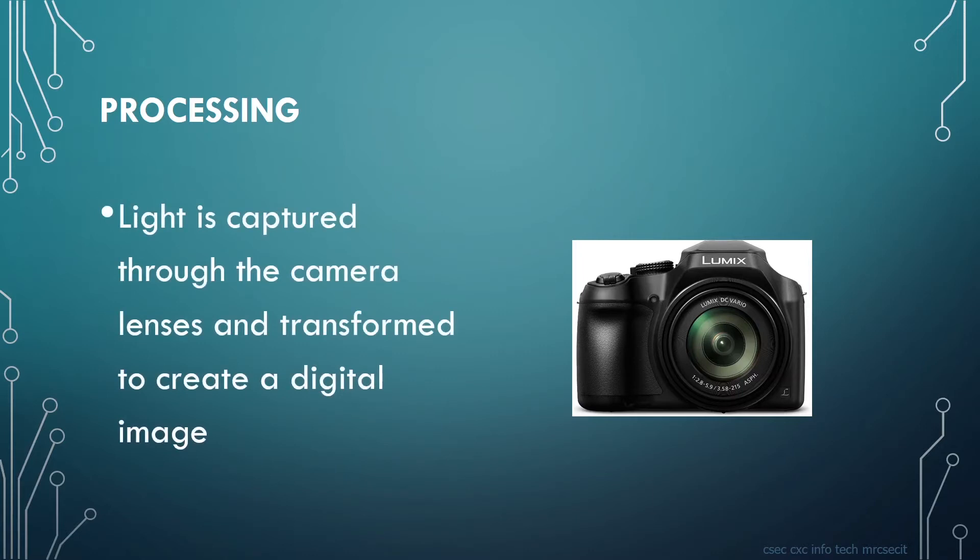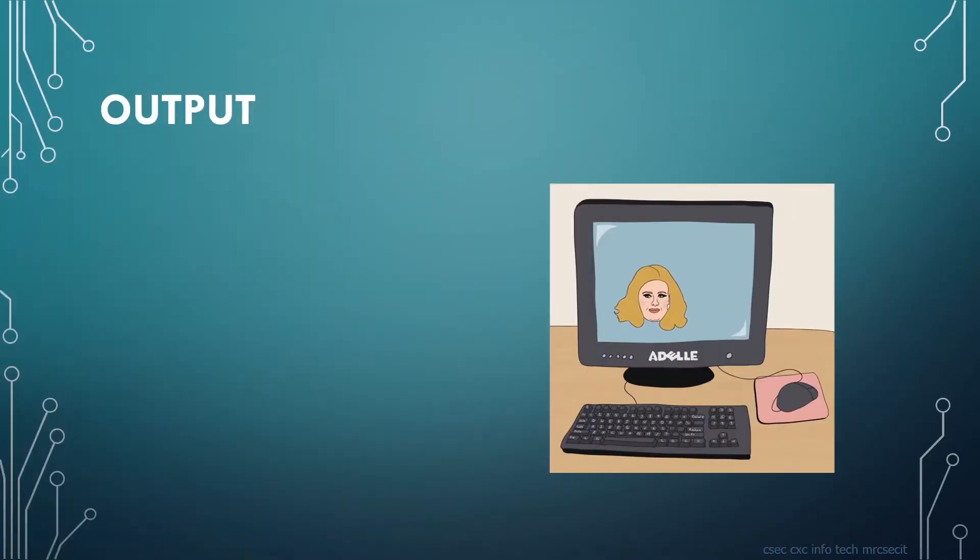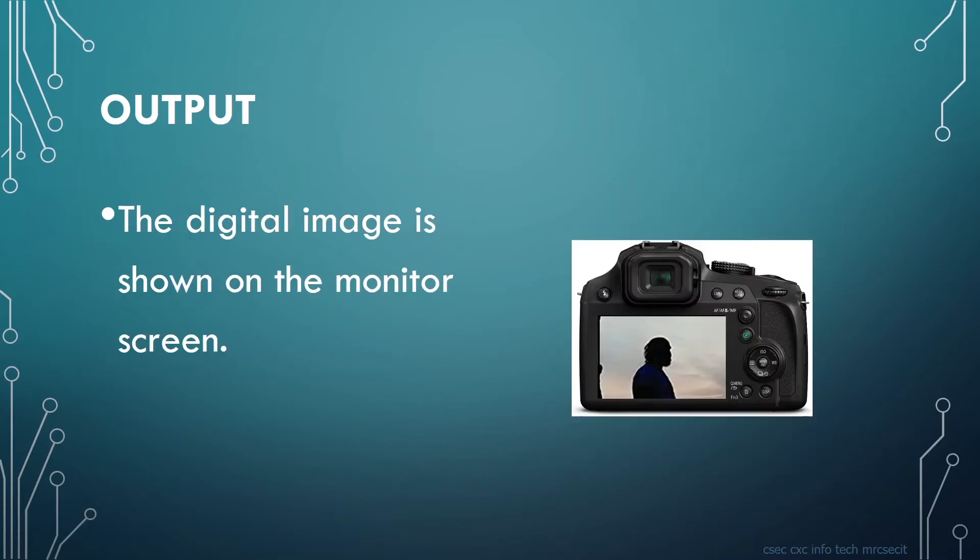Output: sending information to users. Let's take a look at an example of output using a camera again. The digital image is shown on the monitor screen.